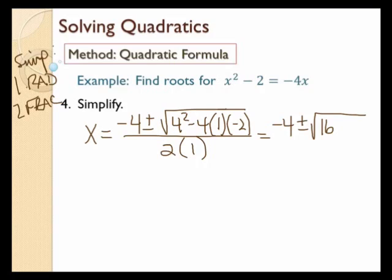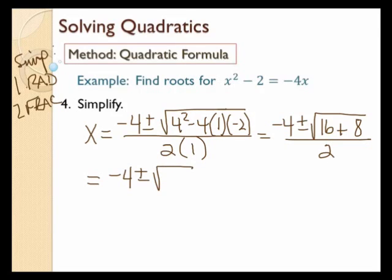So I have negative 4 plus or minus the square root of 4 squared, which is 16. I treat the negative sign here — negative 4 times 1 is negative 4, times negative 2 is positive 8. The reason I treat it as a negative is because whatever I get when I multiply all those things together is the sign it's going to be. So plus 8 all over 2, giving me negative 4 plus or minus the square root of 16 plus 8, which is 24, all over 2.